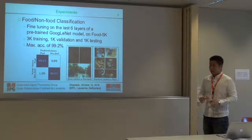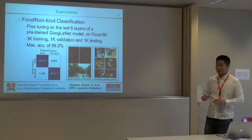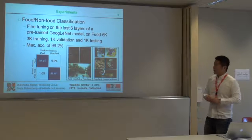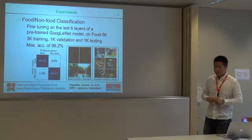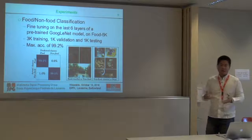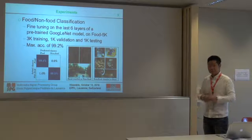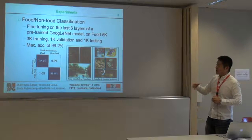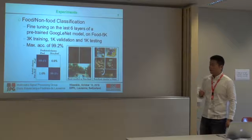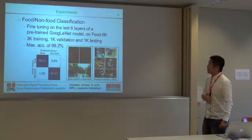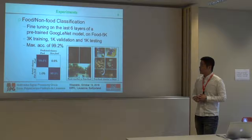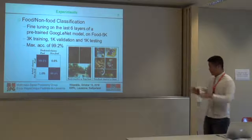Based on these two datasets, we conducted two sets of experiments. For the classification task, we fine-tuned an existing GoogleNet model which was pre-trained on maybe millions of images across thousands of classes. We fine-tuned the last six layers of the parameters on the training set of Food 5K. We then evaluated our classifier on the evaluation dataset, which contains 500 food images and 500 non-food images.